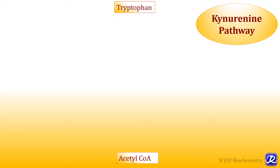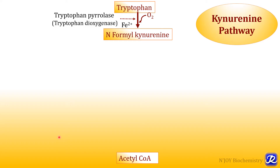In the kynurenine pathway, oxidation of tryptophan occurs to acetyl-CoA. In the first step, the indole ring of tryptophan is broken down by tryptophan pyrolase, also called tryptophan dioxygenase — an iron-containing enzyme — which breaks the aromatic ring to form N-formyl kynurenine from tryptophan. This is the first step of the kynurenine pathway: formation of N-formyl kynurenine.